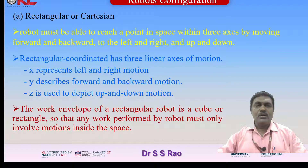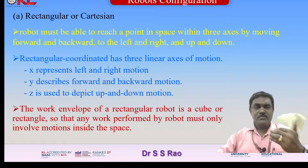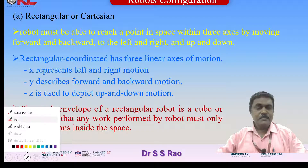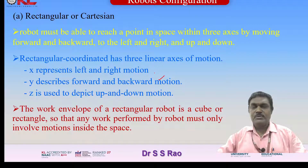Now let us see the rectangular or Cartesian configuration. The robot must be able to reach a point in space within three axes — moving forward and backward, left and right, and up and down. The Cartesian coordinate system has three linear axes of motion: X represents left and right motion, Y describes forward and backward motion, and Z depicts up and down motion.